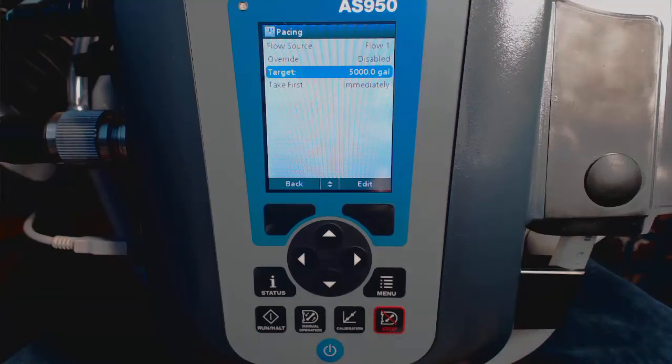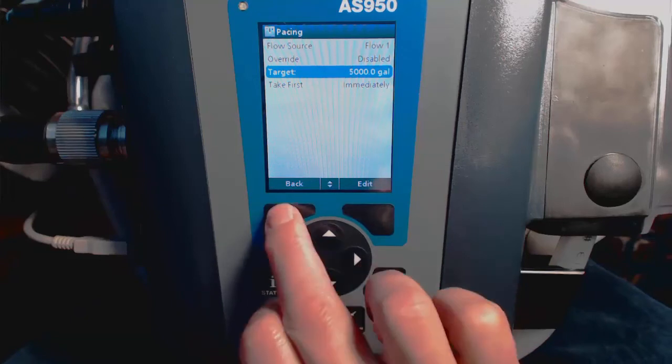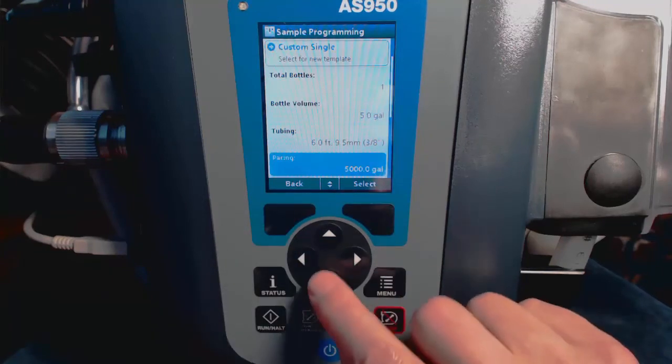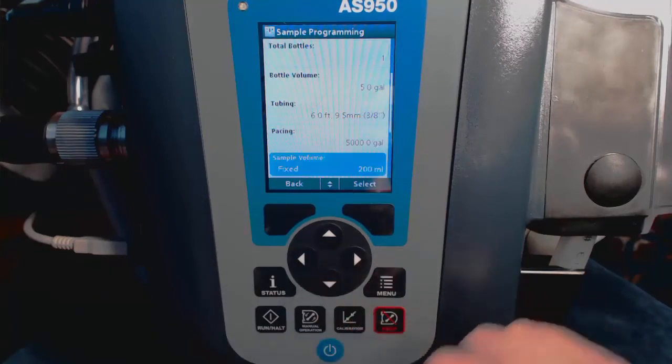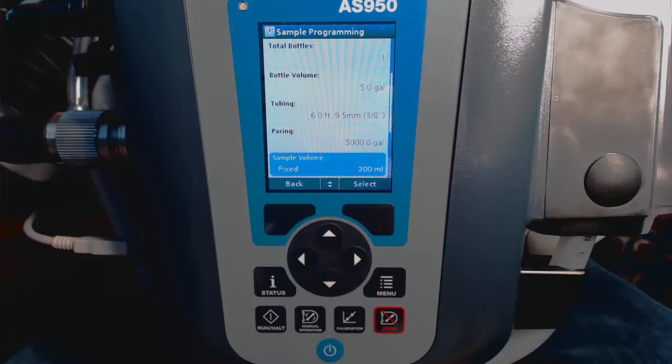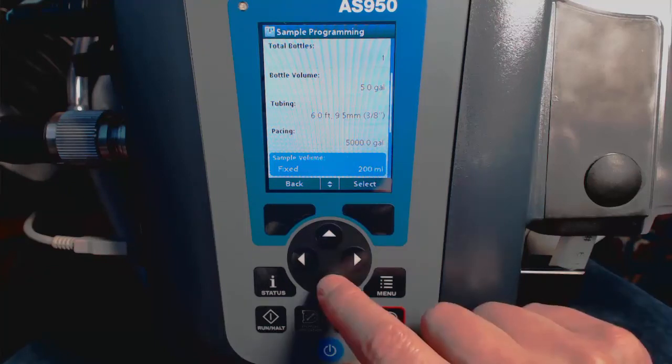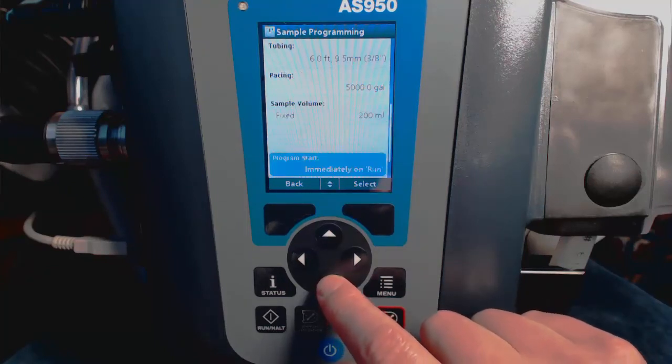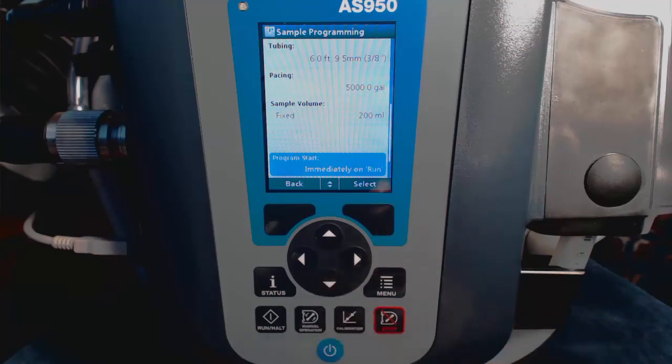Now that we have that entered, we will select back and continue the sampler programming process. Next up is sample volume, and it's at 200 milliliters, and I'll leave that at 200 milliliters. Now we have program start. It's currently at immediately on run, and that's what I'd prefer, so we'll leave that there as well.